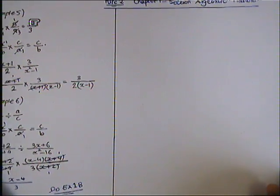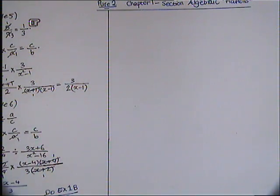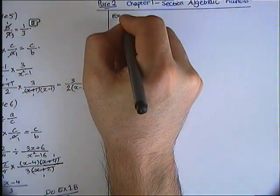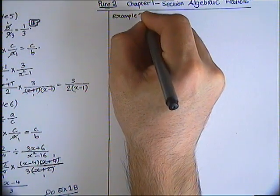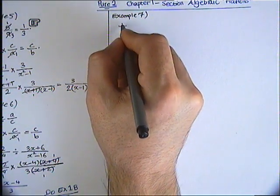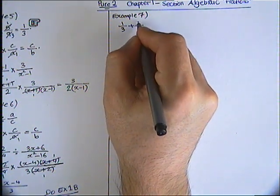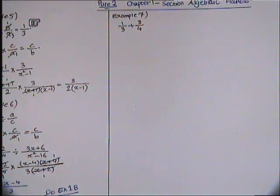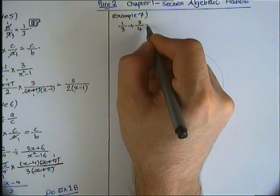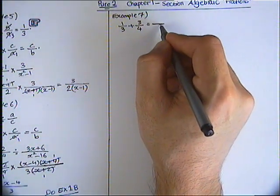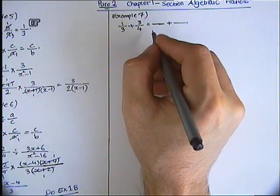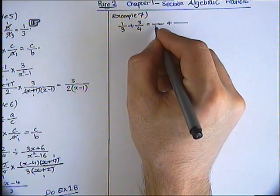So now let's move on to part B of Section 1.2 of Chapter 1. This lesson will focus on adding and subtracting algebraic fractions. Example 7: 1 over 3 add 3 quarters. The first and most important thing when you're adding two fractions is finding the common denominator. To find the common denominator, let's look at the lowest common multiple. 3 times 4 is 12. 12 is the lowest common multiple.